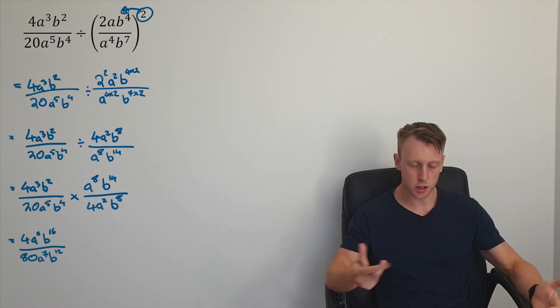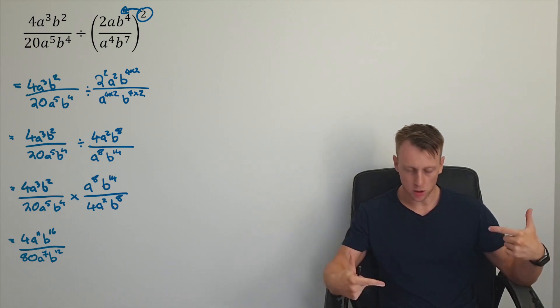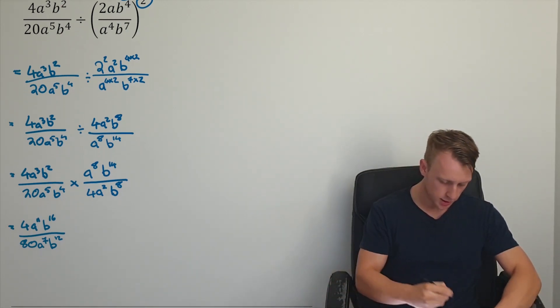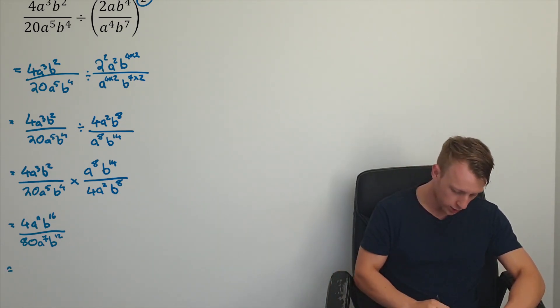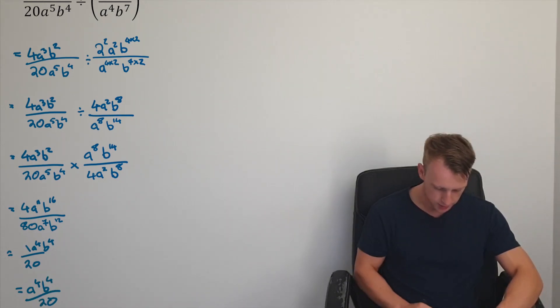And then just finishing off using the second index law, where because I've got division of terms, I am just going to subtract the powers, leaving me with 4 divided by 80, I get 1 over 20. And then a to the power of 4, b to the power of 4, leaving me with just a^4 b^4 over 20. That's fully simplified down.